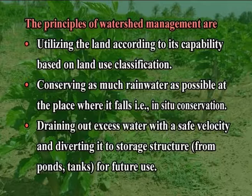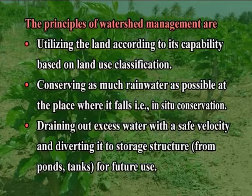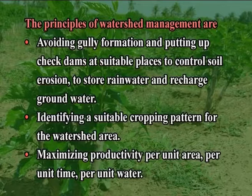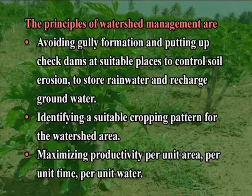The principles of watershed management include: utilizing land according to its capability based on land use classification; conserving as much rainwater as possible at the place where it falls, that is in-situ conservation; draining excess water with a safe velocity and diverting it to storage structures such as ponds and tanks for future use; avoiding gully formation and constructing check dams at suitable places to control soil erosion, store rainwater and recharge groundwater; and identifying a suitable cropping pattern for the watershed area, maximizing productivity per unit area, per unit time, and per unit water.